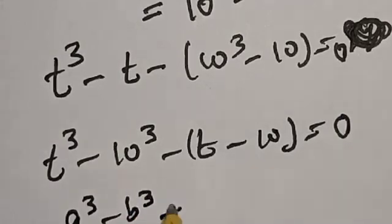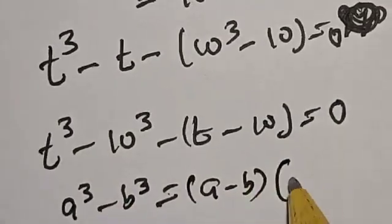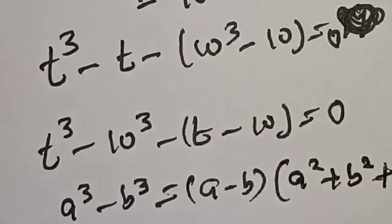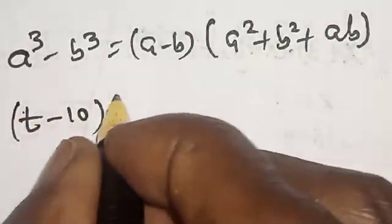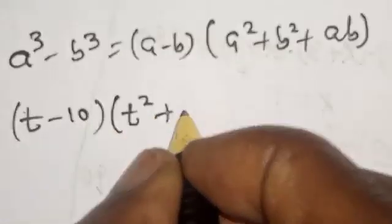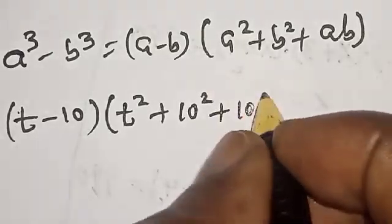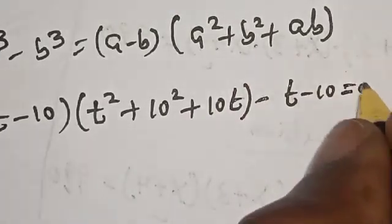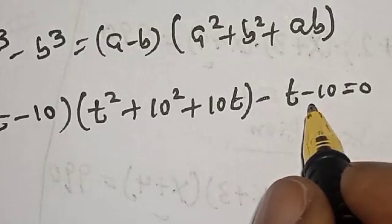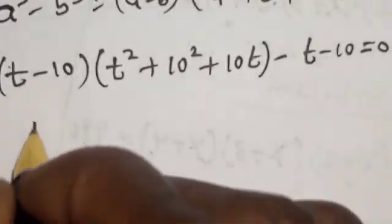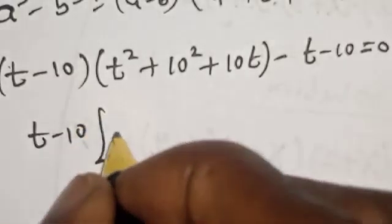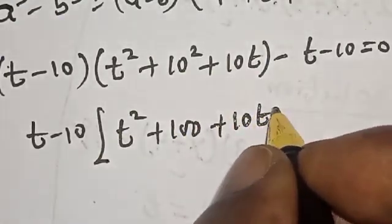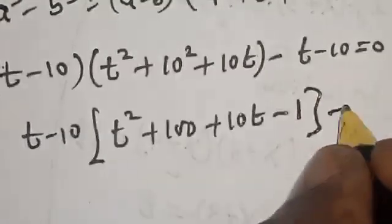Applying the difference of cubes rule — a³ − b³ = (a − b)(a² + ab + b²) — we factor t³ − 10³ as (t − 10)(t² + 10t + 100). So the equation becomes (t − 10)(t² + 10t + 100) − (t − 10) = 0. Factoring out (t − 10) gives (t − 10)(t² + 10t + 100 − 1) = 0.